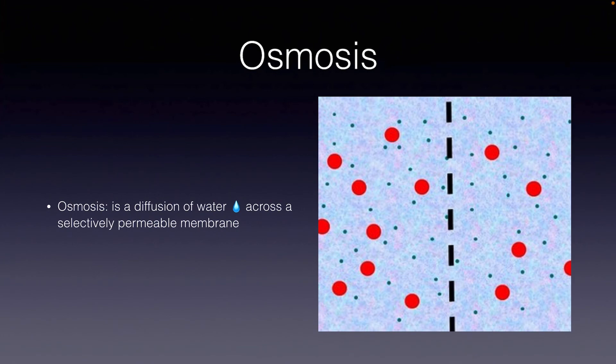And osmosis. Osmosis is a diffusion of water across the selective permeable membrane. This is what osmosis is and you can see this is what it looks like.